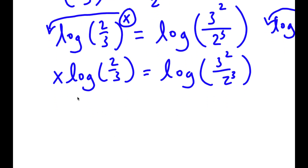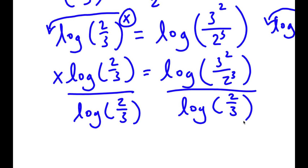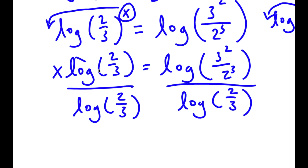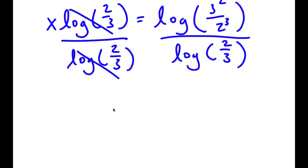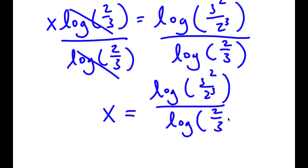Now I'm going to divide both sides by log of 2 over 3. So these two cancel out and I have x is equal to log of 3 squared over 2 to the power of 3, divided by log of 2 over 3.